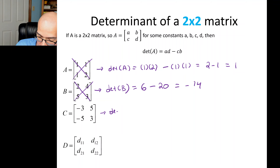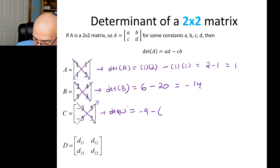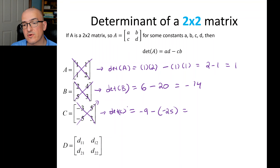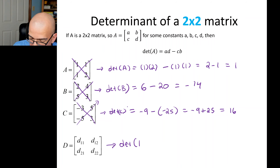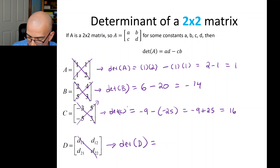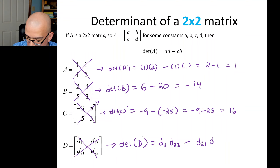For C, the determinant is the down product negative 9, minus the up product negative 25. We're subtracting a negative number, so it turns into addition: negative 9 plus 25, which is positive 16. For D, if it just has letter entries, we multiply the letters: the down product d11 times d22, minus the up product d21 times d12. That's the best we can do if we don't know what those entries are.